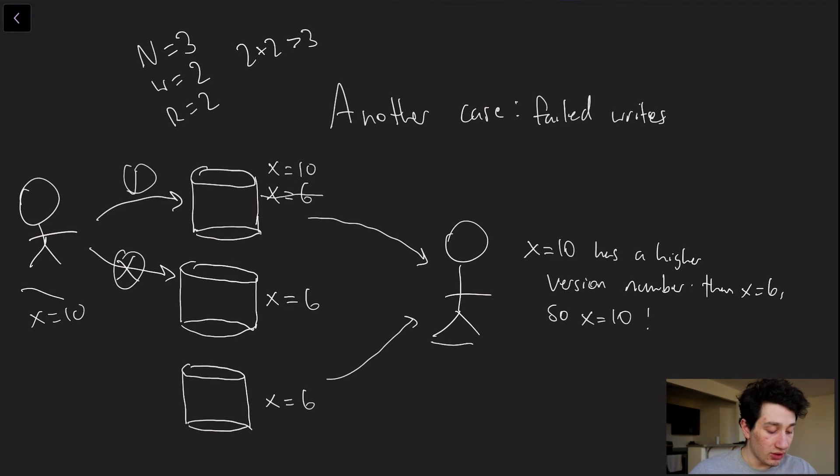Now the problem is that when this guy over here on the right tries to read, not only does he see the fact that X equals 10, even though this write technically wasn't valid. Why was the write not valid? Because it didn't successfully get to two nodes, it only got to one node. But it never got overturned, so that's a big problem. And the reason this is a problem is because this guy here thinks the value is X equals 10. But if I have another guy over here, and he reads from these bottom two nodes, he is going to think the value is X equals 6. So it's possible for two people who are reading from our cluster to actually disagree on the value.